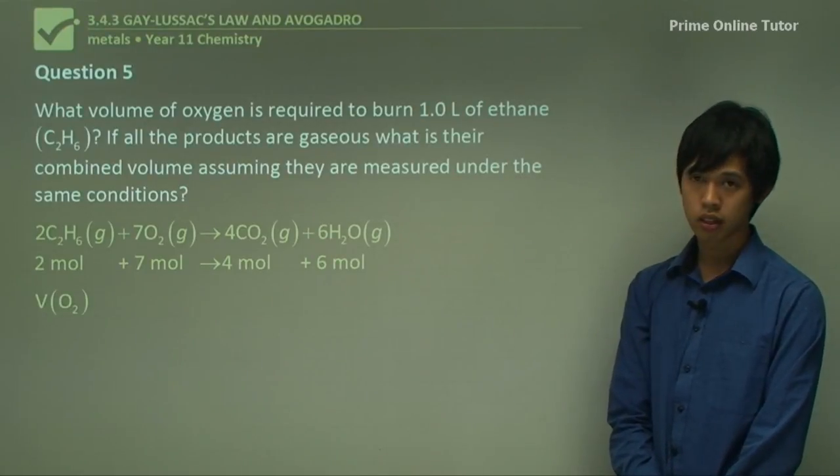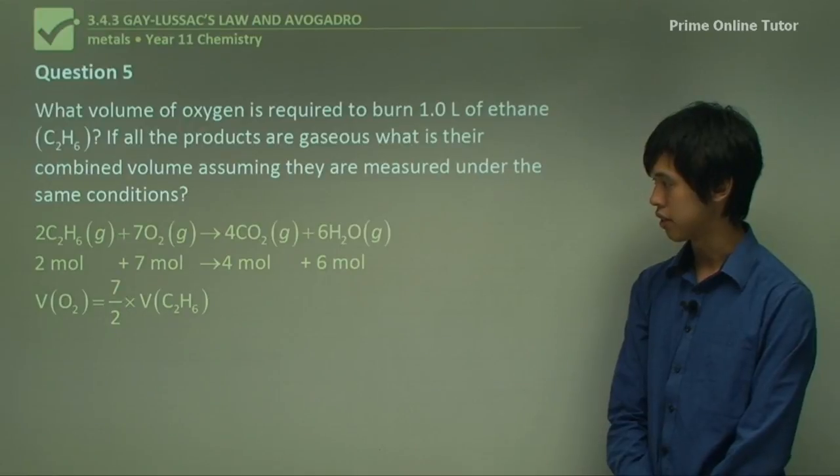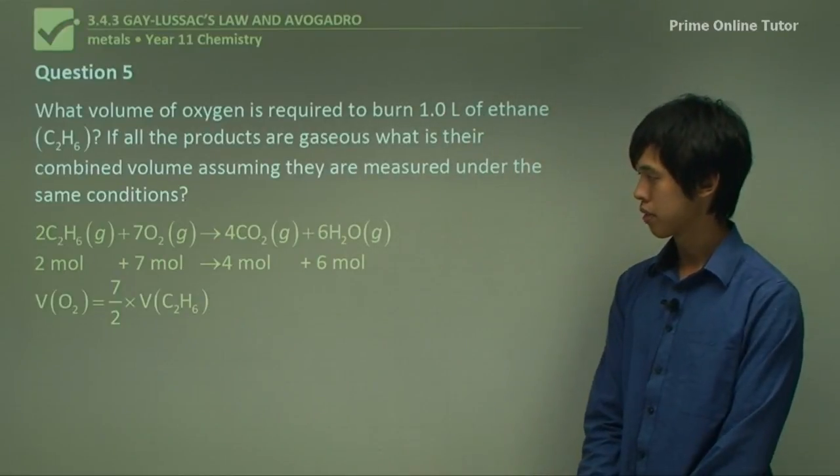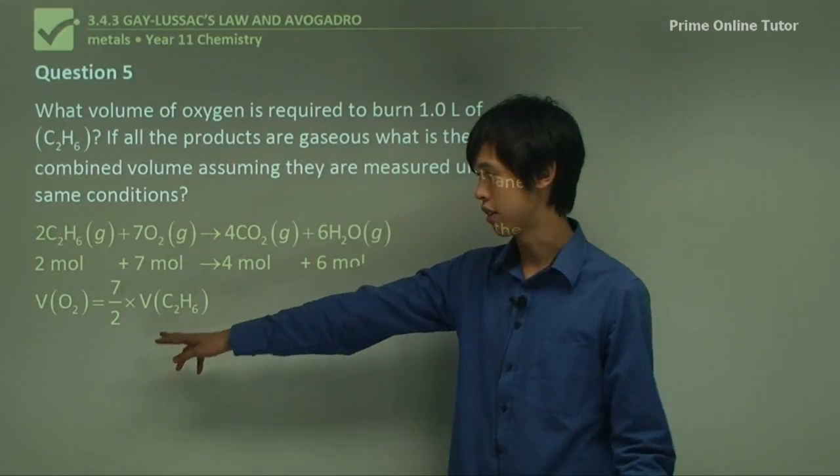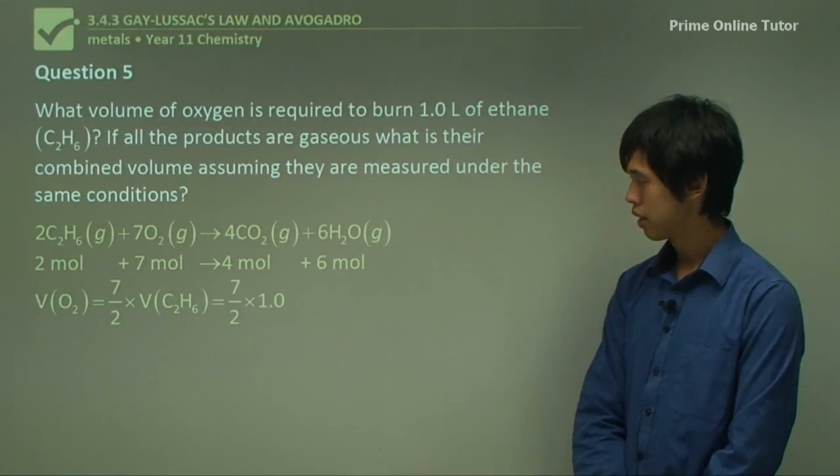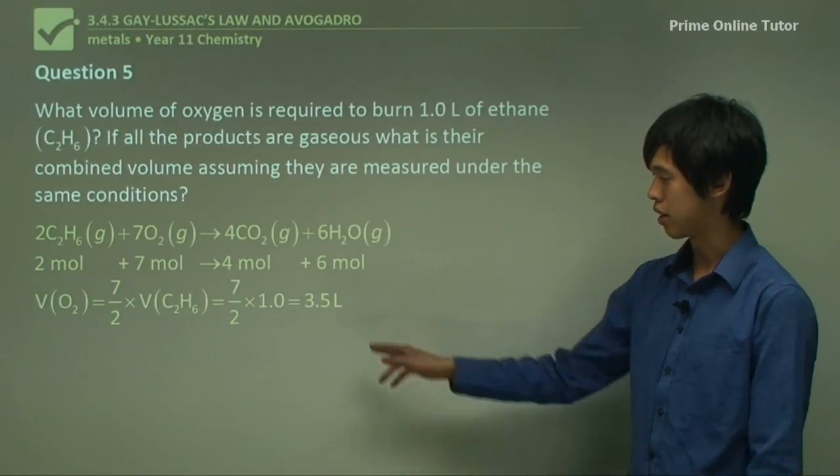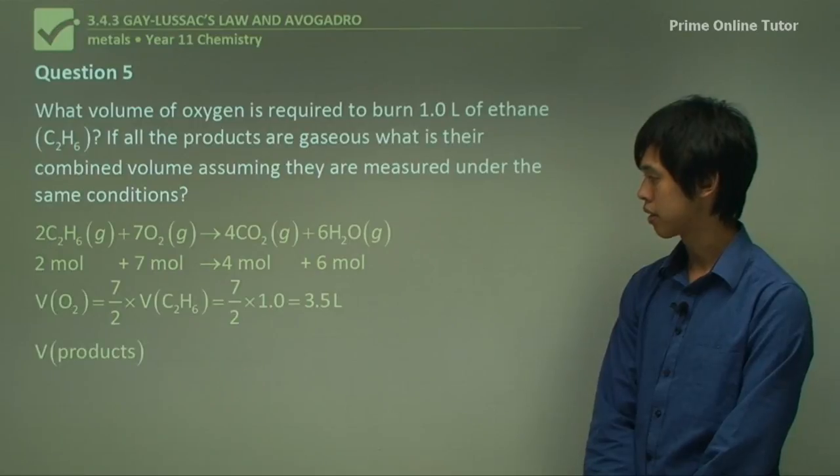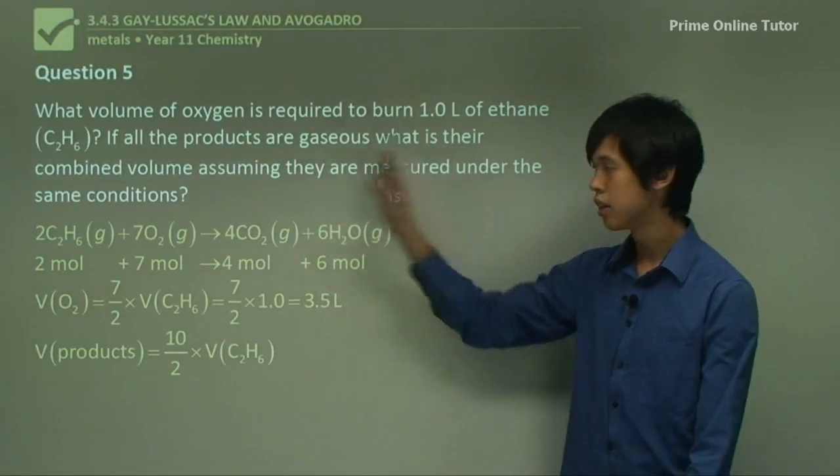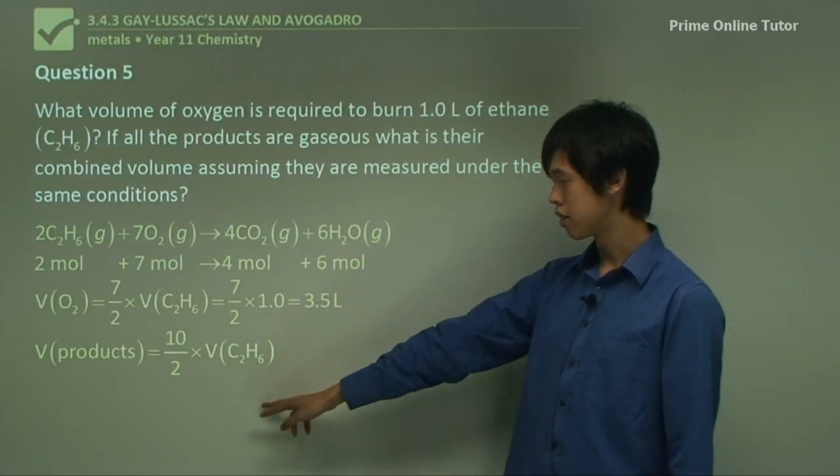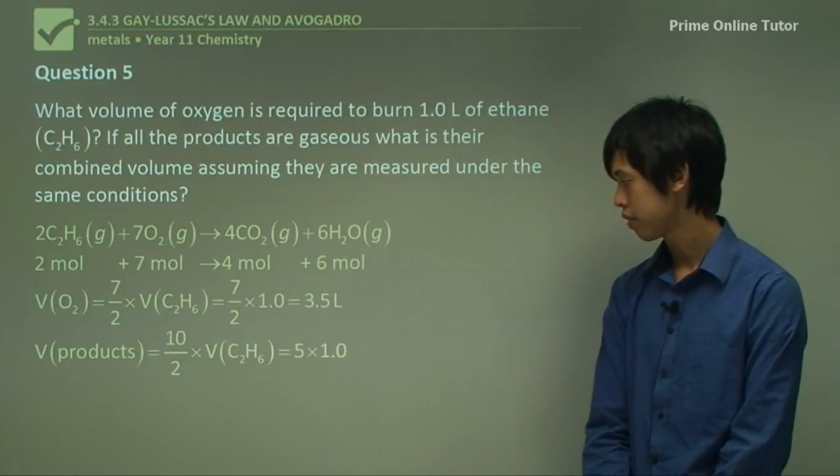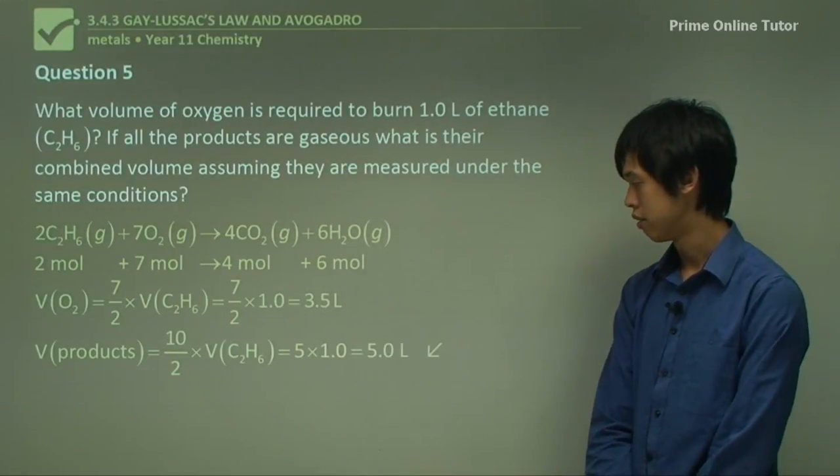So the volume of the O2 is just 7 on 2 times the volume of the C2H6. So we could have worked that out by using the fractional coefficient. So we just made it that much faster. But this is OK. So it's just 7 on 2 times 1, which is 3.5 liters. Now the volume of the products is just 10 because there's 10 volumes of gas on this side, on the right-hand side. So it's just 10 on 2 times the volume of the ethane. So it's just 5 times 1, which is 5 liters.